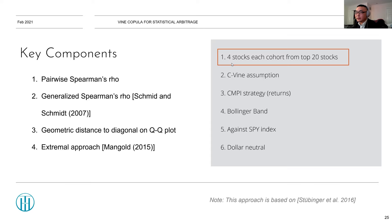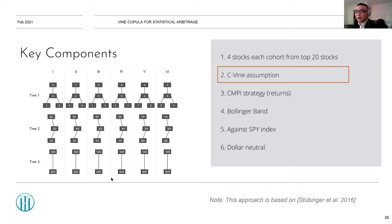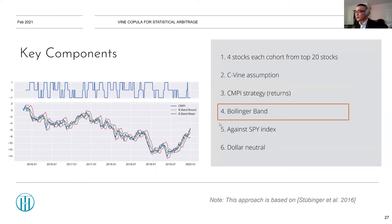They impose a C-vine structure and select it automatically using existing algorithms. They also work on returns rather than prices directly — this relates to the CMPI strategy we've discussed before, which is a nice building block for more complicated projects like this. They also use a Bollinger Band as well.